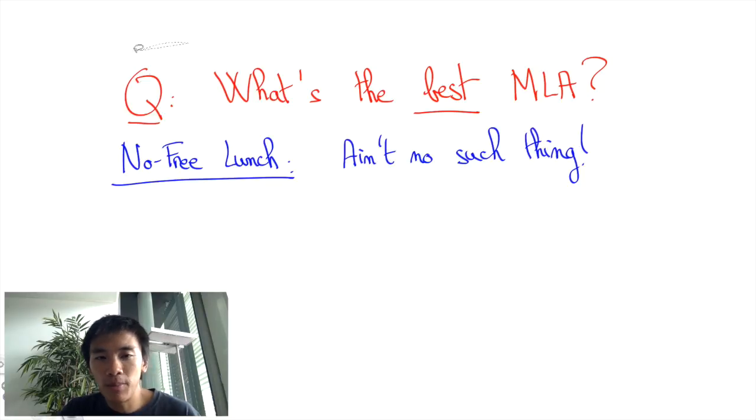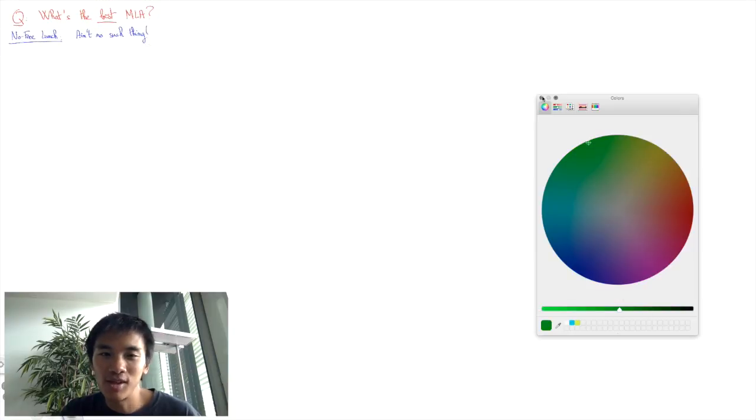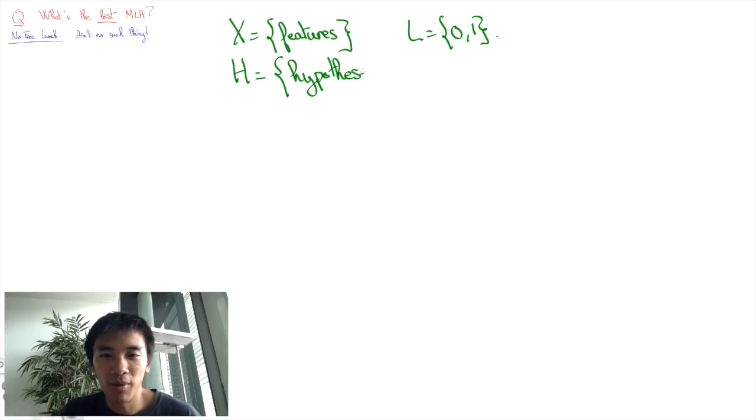Let's state a first very basic, probably the easiest version of all No-Free-Lunch Theorems. Consider a set X of features, a set L equals 0,1 of binary labels. We'll include all unstructured hypotheses, that is, we're going to consider the set H of all prediction functions X to L as a hypothesis class and a uniform probability distribution U over this set.